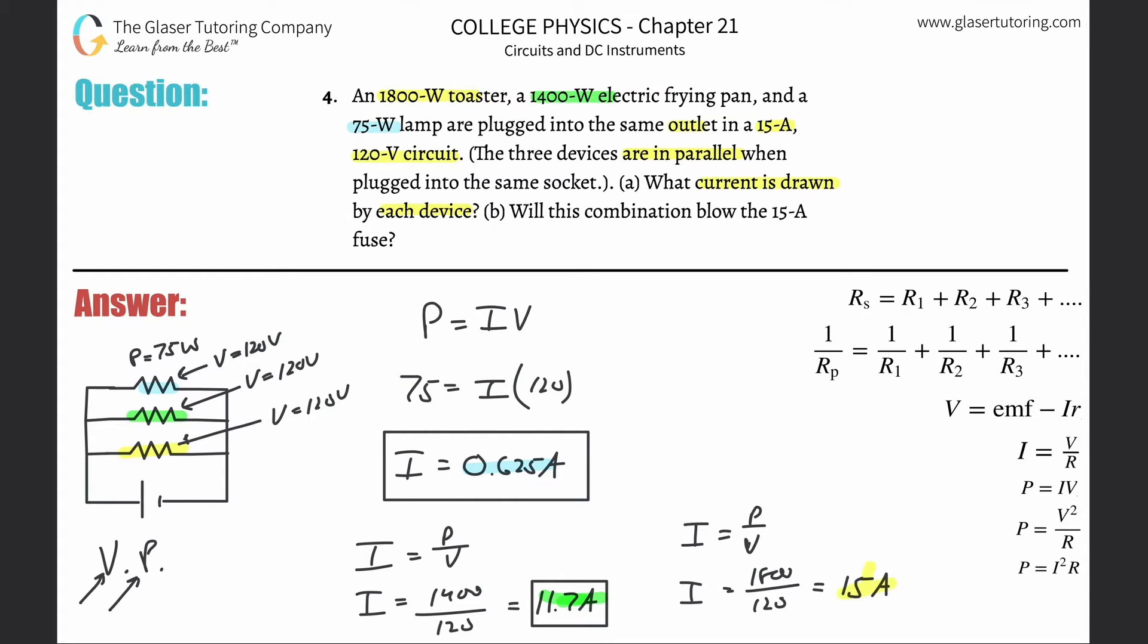What did we just find? The current flowing through the 1800-watt toaster is 15 amps. The one through the green, which is the frying pan, was carrying 11.7 amps, and through the lamp it was carrying 0.6 amps.